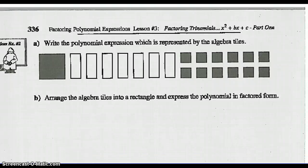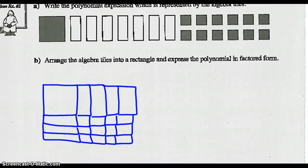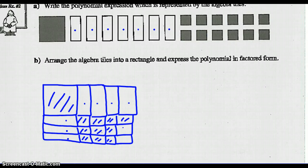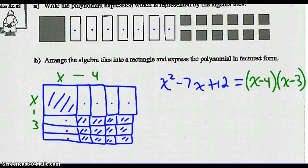Write the polynomial expression which is represented by these algebra tiles. I want you to draw a rectangle and then express the polynomial in factored form. Here's my rectangle: I've got 1x squared positive, 7 negative x's, and 12 positive 1's. So the original polynomial is x squared minus 7x plus 12. In factored form, it's the length and width of the shape — but these are negatives, so x minus 4 and x minus 3. So the factors are x minus 4 times x minus 3. As long as you can rearrange the algebra tiles into a rectangle, the length and width will be the factors of your polynomial.